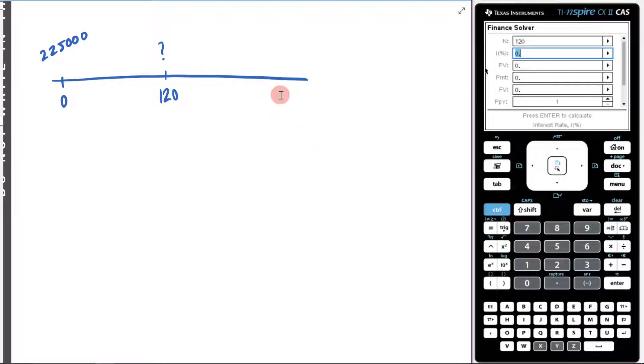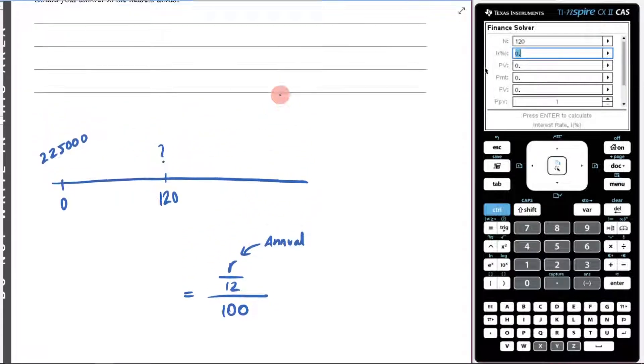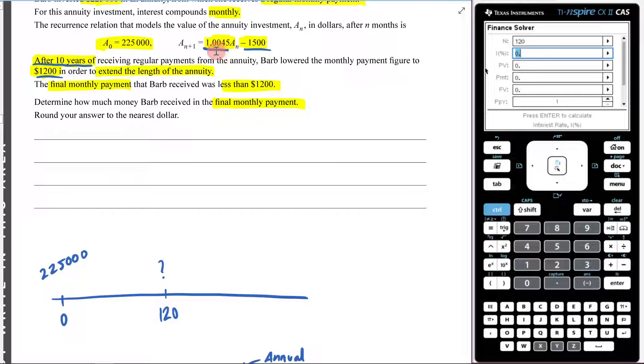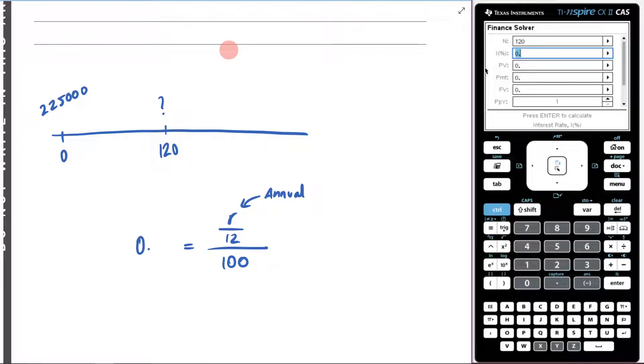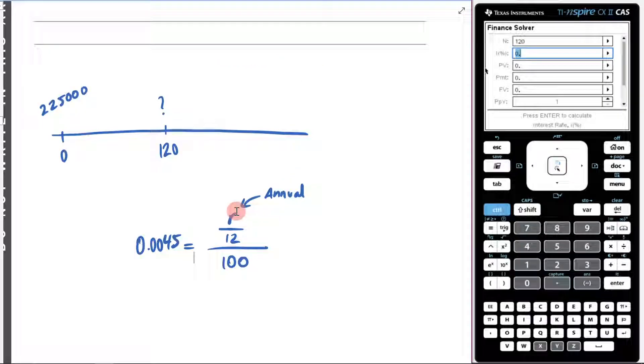So if we're just to think about this for a second, R is equal to my annual interest rate. I then divide that by 12, and then I divide that by 100 to get the decimal of my monthly interest, which is 0.0045.